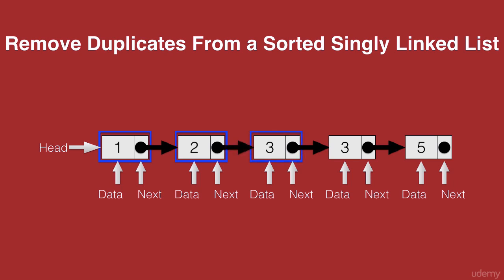Now this time when we check if the data in this node is equal to the data in the next node we see that they are equal which means that's a duplicate.